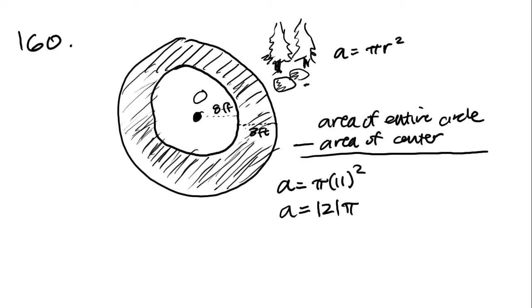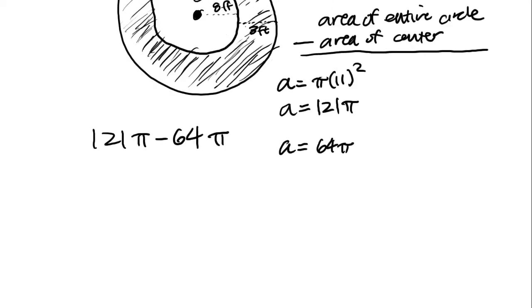Now we have to find the area of the inner circle. They already gave us that the radius is 8 feet. So A equals pi times 8 squared is 64 pi. So now we just take 121 pi, subtract 64 pi, and we're left with 57 pi. And 57 pi is answer D.